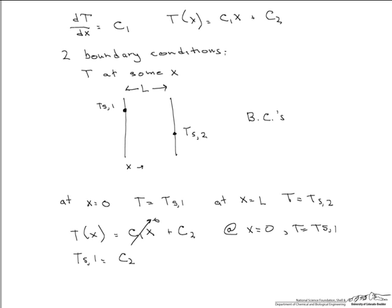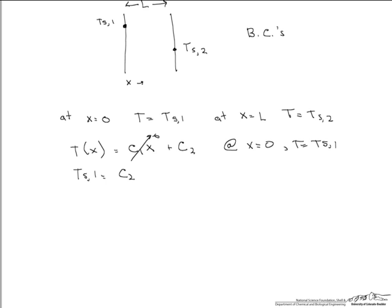Now let's look at the second boundary condition that says at x equals L, our T equals Ts2. So when we put that in our temperature profile, it says that Ts2 equals C1*L plus Ts1, which we've already calculated. So now we can solve for C1, which is Ts2 minus Ts1 divided by L.